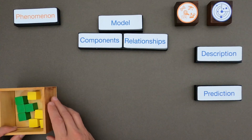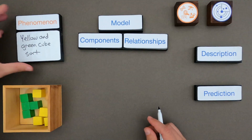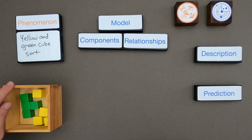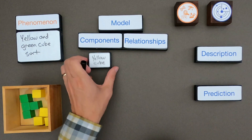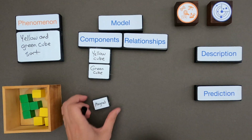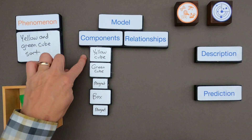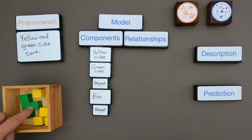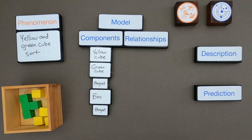The first thing I want to do is identify what the phenomenon is: yellow and green cubes get sorted in this box. Next I want to write down what I think are the most important components to include in a model. I think the most important components are a yellow cube, a green cube, and the box. I also think there might be a magnet in the green cube and a magnet in the box — those are the big components. Remember, when you create a model you don't have to include everything, just what you think are the most important components.